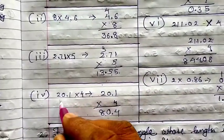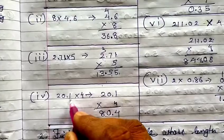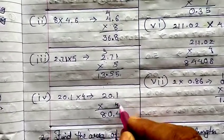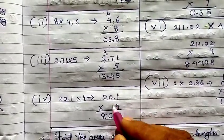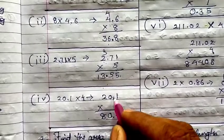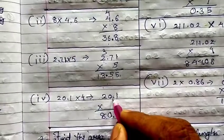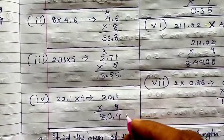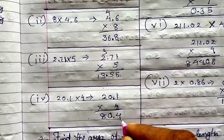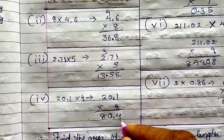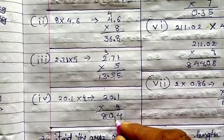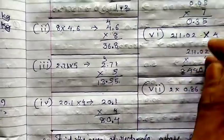The 4th one: 20.1 into 4. 4 ones are 4. 4 zeros are 0. 4 twos are 8. Where to put the decimal? After the decimal there is 1 digit, so from the last digit leave 1 digit and place your decimal there.